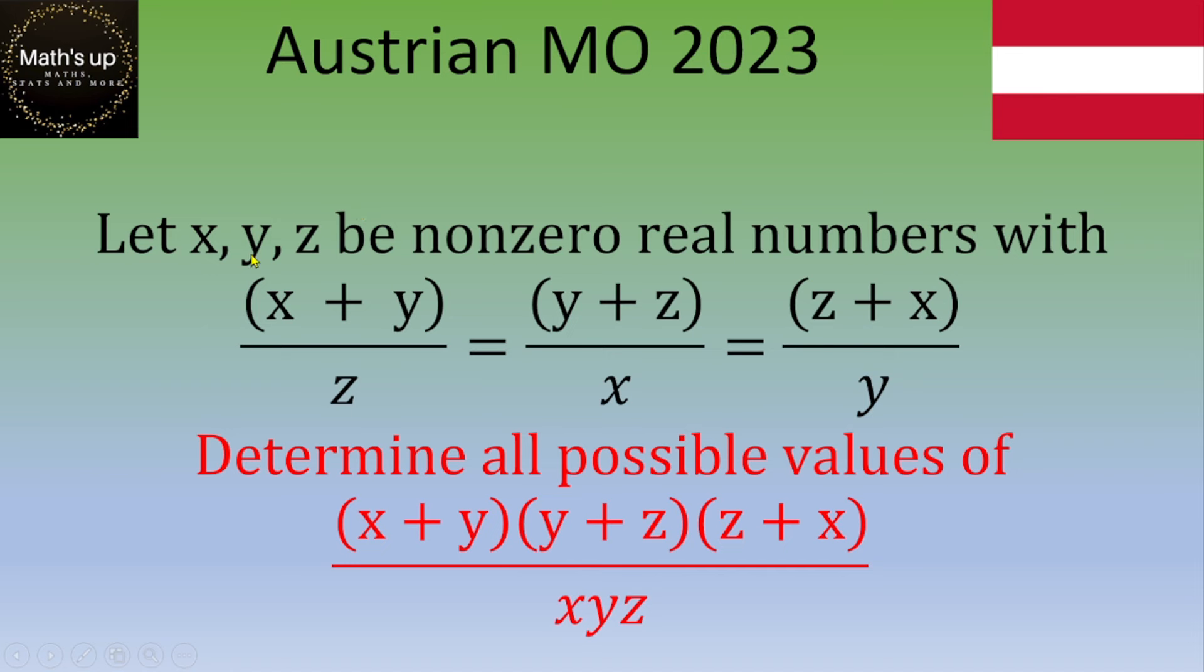Let x, y, and z be nonzero real numbers with (x+y)/z = (y+z)/x = (z+x)/y. Determine all possible values of (x+y)(y+z)(z+x) over xyz. If you want to try, please pause the video. Otherwise, let's see the solution.